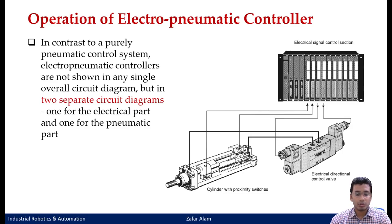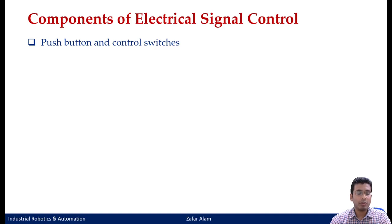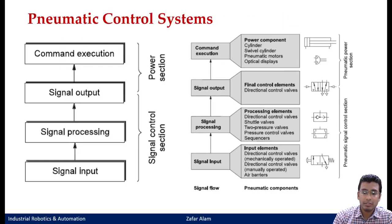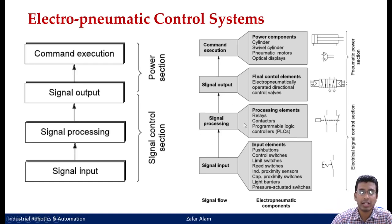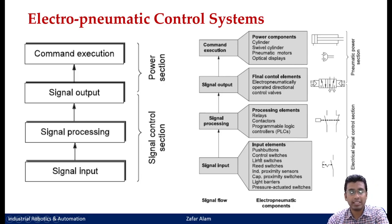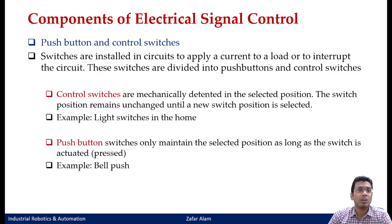So you will have two circuit diagrams: one will be your electrical circuit diagram having all your electrical input elements and processing elements, and the other part will be your power section comprising your pneumatic cylinders, valves, and power source — the compressor in pneumatic or pump in hydraulic. We will now go into the details of each component used in the electrical signal control. We start with signal input elements, then processing elements — relays — and finally control elements, all specific to the electro-pneumatic circuit.